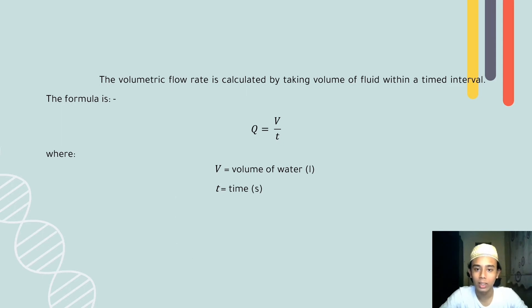The volumetric flow rate is calculated by taking volume of fluid within a time interval by using the formula Q equals V over t, where V is volume of water in liter and t is time in second.